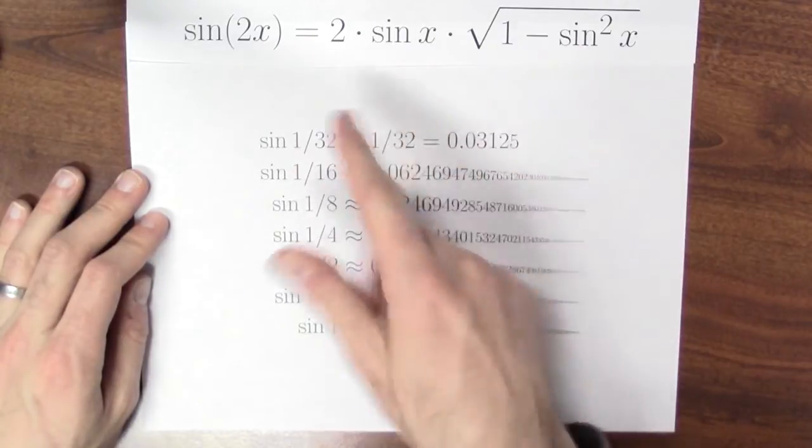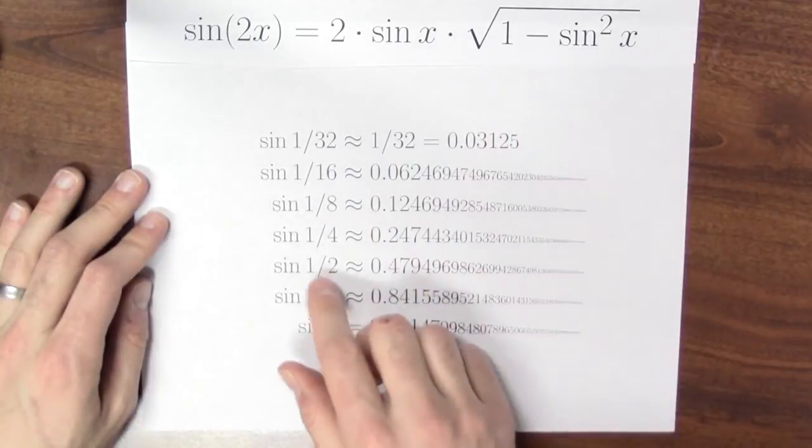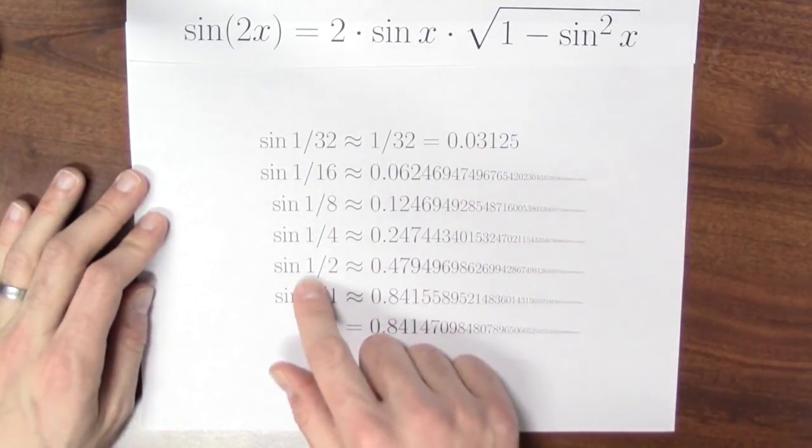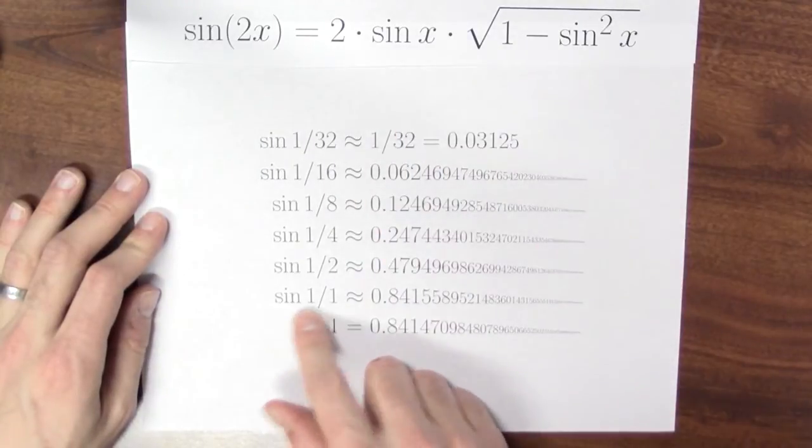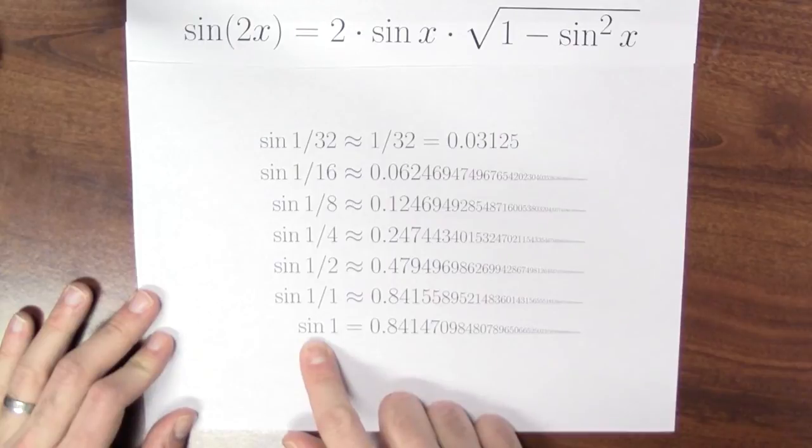Then I can use this double angle formula again to get an approximate value for sine of 1/8 and again to get an approximate value for sine of 1/4 and again to get an approximate value for sine of 1/2 and then again to get an approximate value of sine of 1, which is really quite close to the actual value of sine of 1.